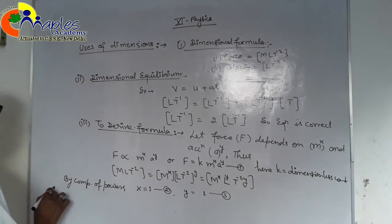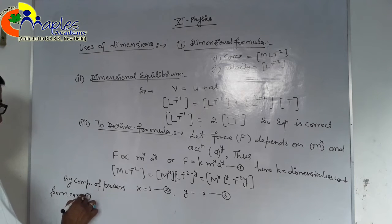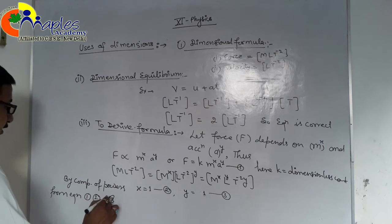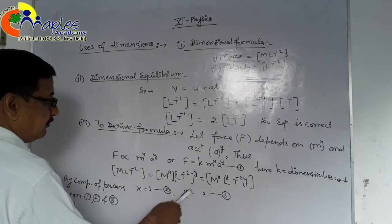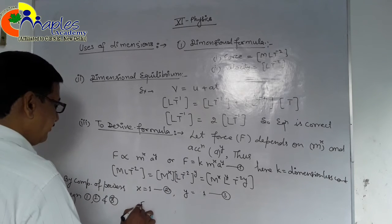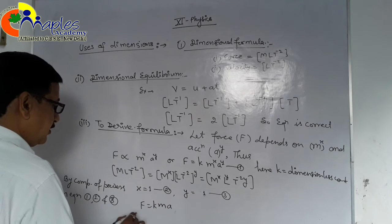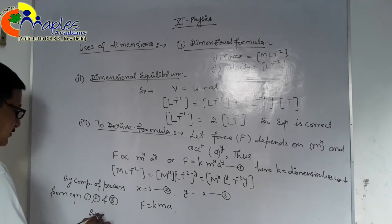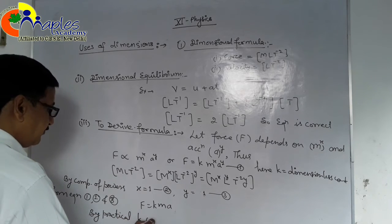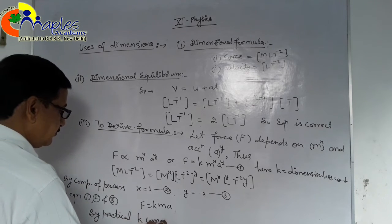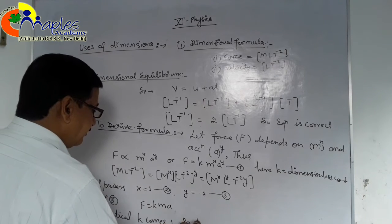Substituting x = 1 and y = 1 back into the equation: F = k·m¹·a¹. By experiment, k = 1, so F = ma. This is how we derive the formula using dimensional analysis.